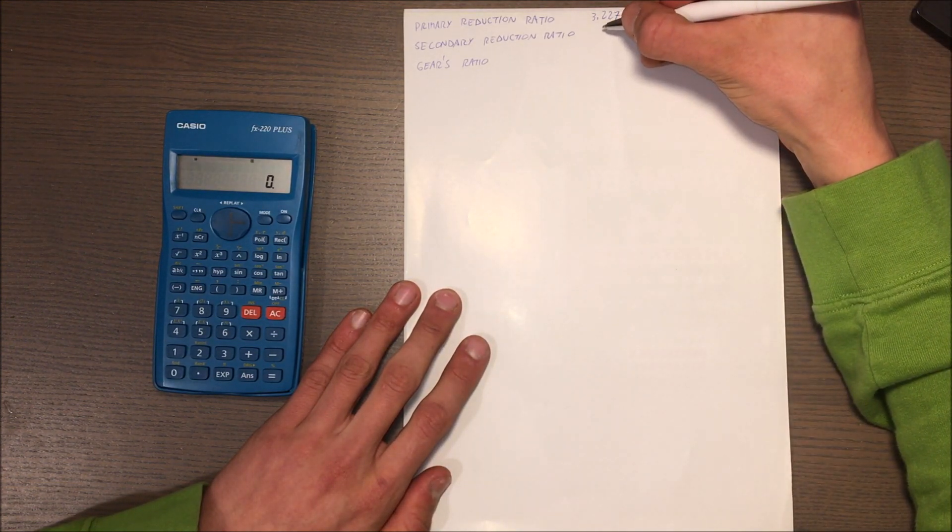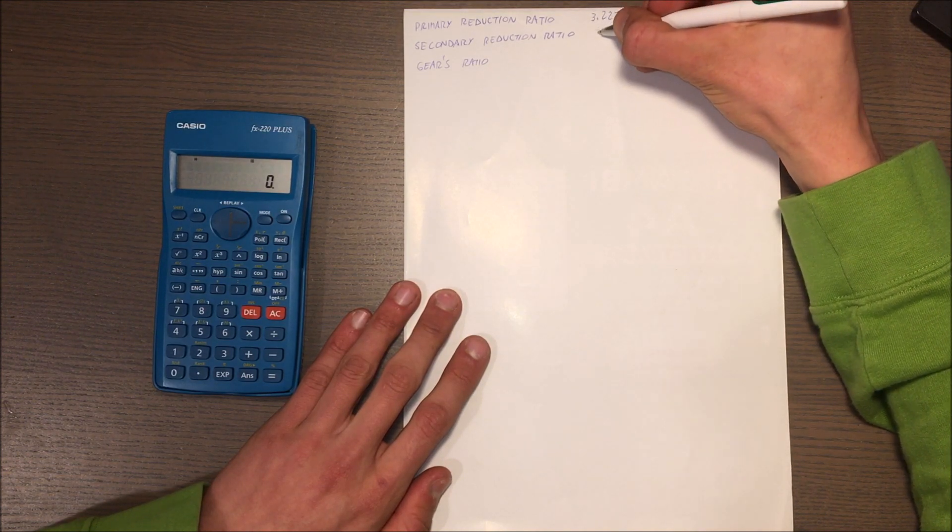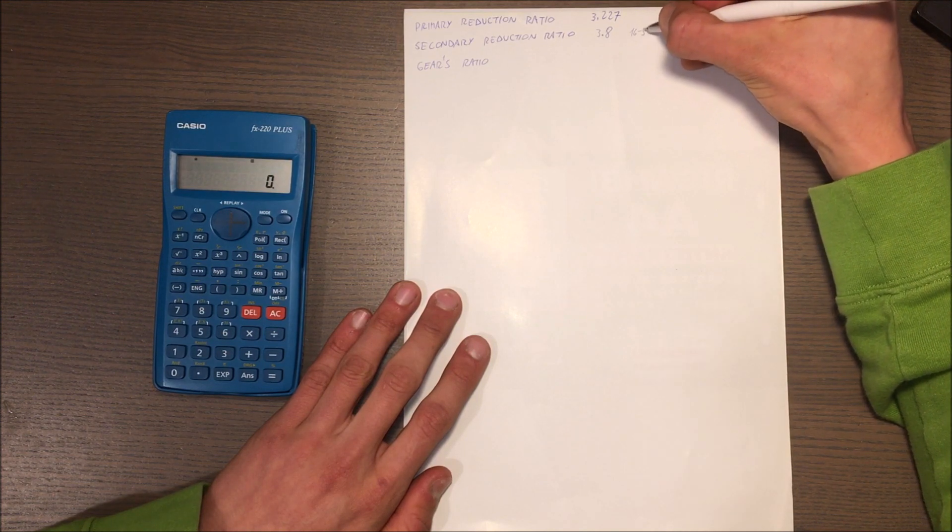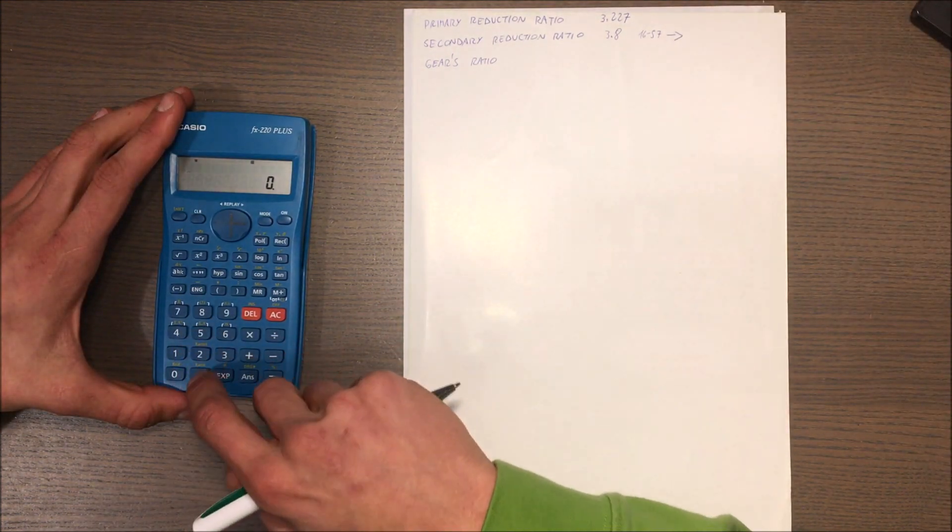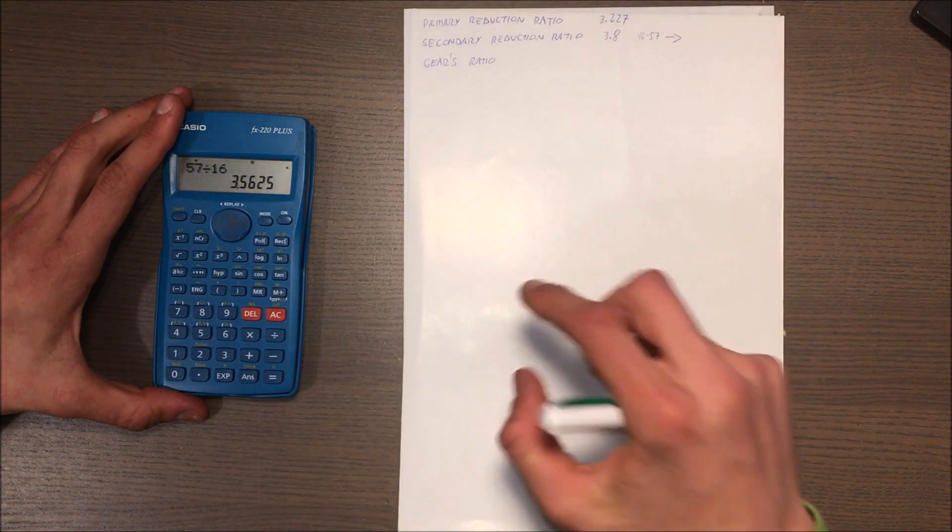The secondary is with my gearing, which is 15/57, which is not the original for the DT. The original is 16/57. If you've got the 16/57, you can just do the math. You've got to do 57 divided by 16 and that's your ratio, 3.56.